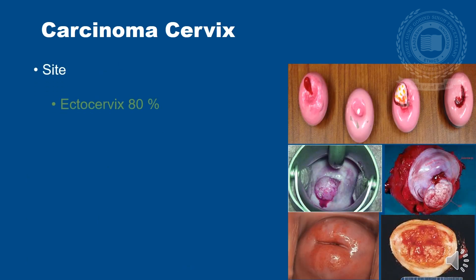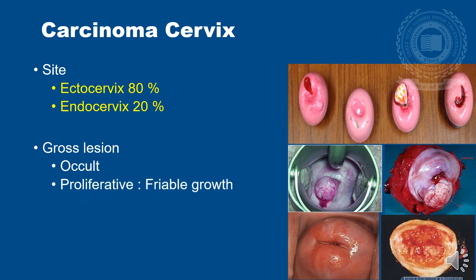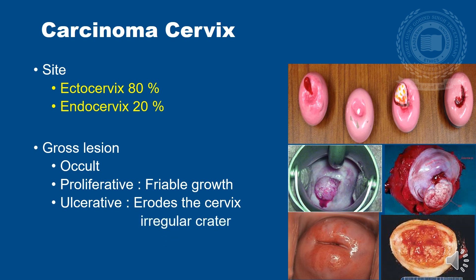Carcinoma cervix arises in 80% of cases from the ectocervix (the external part of the cervix); the remaining 20% arises from the endocervical canal. Lesions might be occult — not visible to the naked eye — hence screening programs like Pap smears are very important. Proliferative lesions may look like friable cauliflower-like growths; ulcerative lesions erode the cervix with an irregular crater; or it can be infiltrative, arising from within the endocervical canal and expanding the cervix into a barrel-shaped structure.